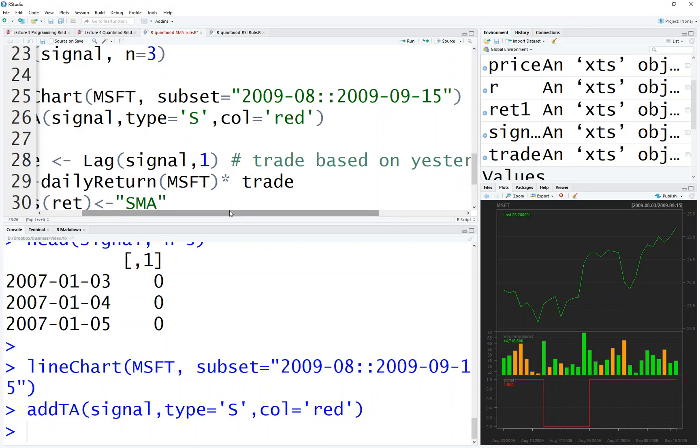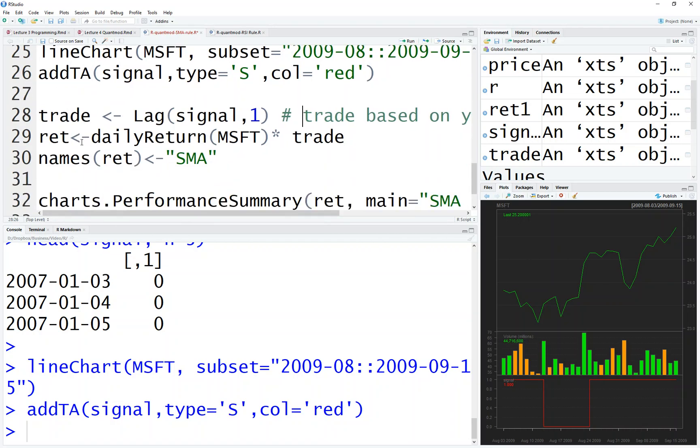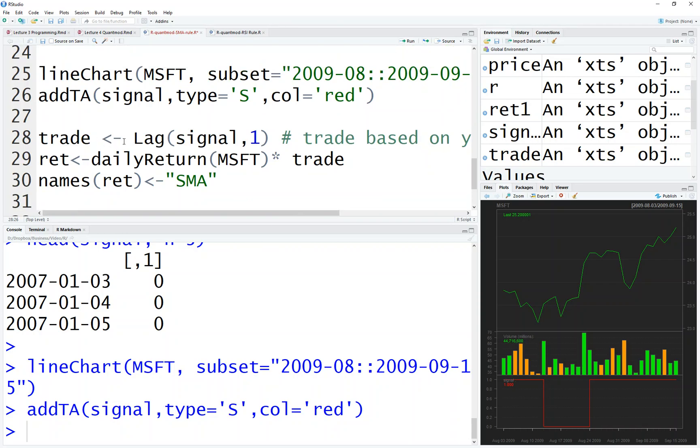And then I have a daily trade—a daily trading rule based on yesterday's signal. I calculate the daily return. It is day trading, so this is the daily return. I name the column 'SMA', and then I run this function.